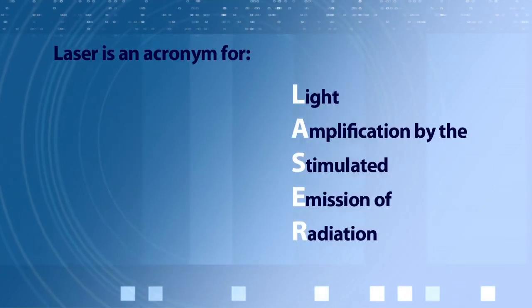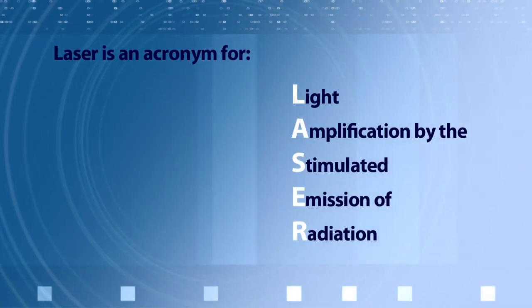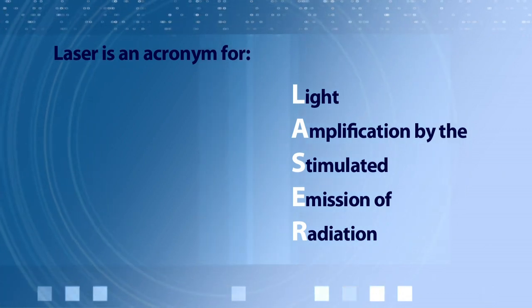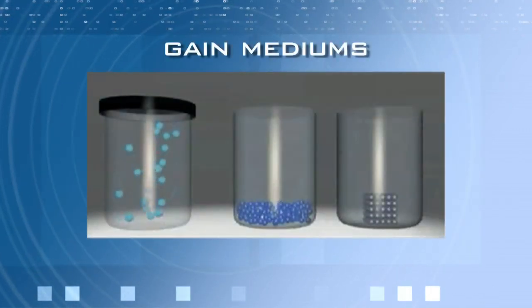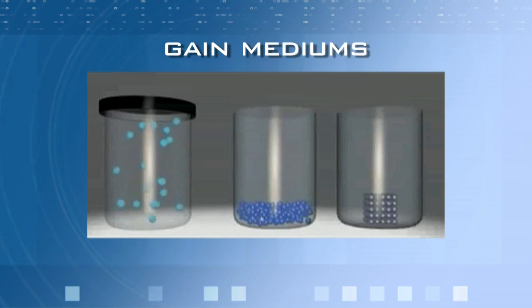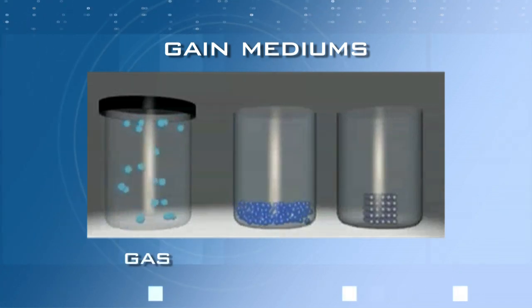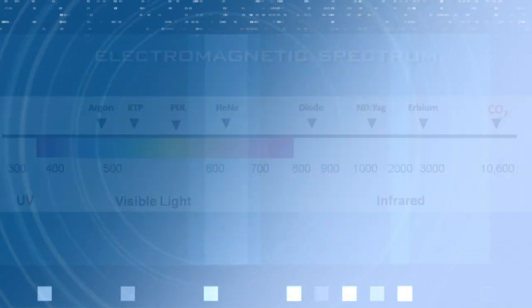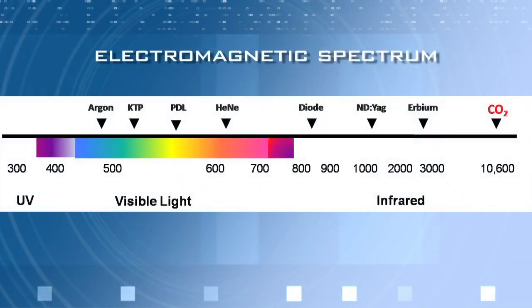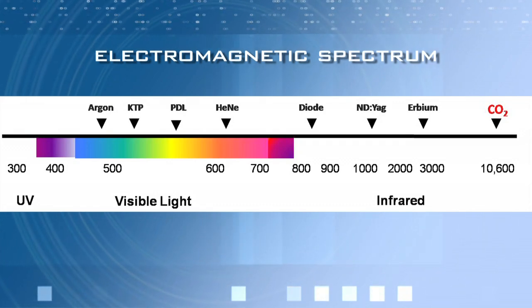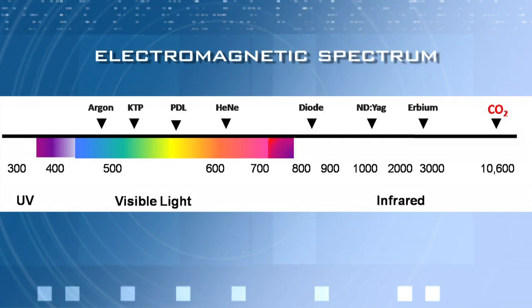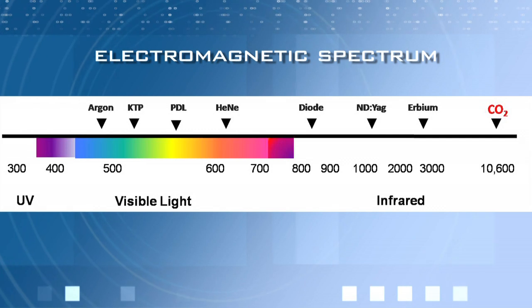A laser is a means of producing light by amplification from stimulated emission radiation. There are three components that comprise a laser. The first is the gain medium. The gain medium can be a gas, liquid, or solid and is contained within a chamber. The gain medium gives lasers their name and determines their wavelength. Laser wavelength is the critical factor in determining laser tissue interaction.